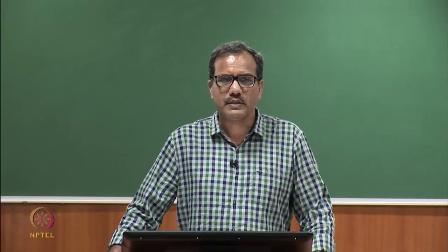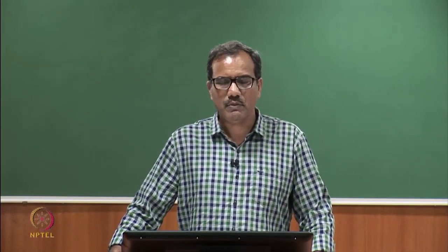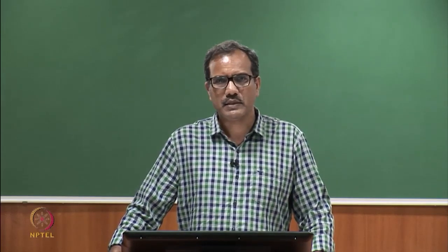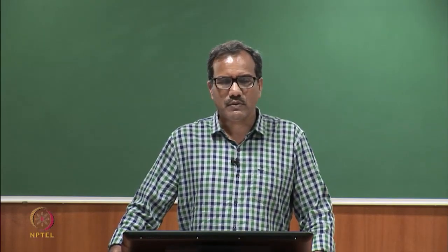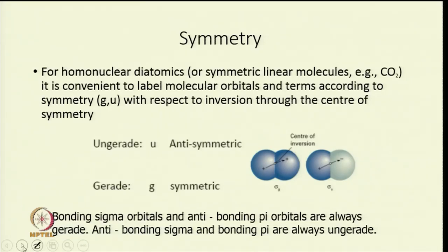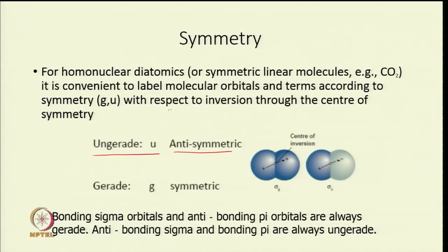Today I will discuss symmetry, because it is important to know the symmetry of molecular orbitals generated by mixing of atomic orbitals. Symmetry is particularly important for selection rules. For homonuclear diatomic molecules or symmetric linear molecules like CO2, it is convenient to label molecular orbitals and terms according to symmetry G and U. G stands for Gerade and U stands for Ungerade — symmetry with respect to inversion through the center of symmetry.